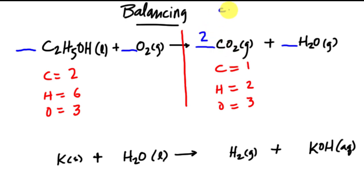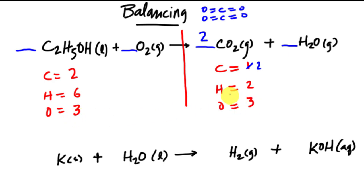So I'm going to balance my carbon first. To balance the carbon I need to get two on both sides, so I'm going to throw a two right here. That means I have two of these CO₂ molecules, so I now have two carbons. I also have to update my oxygens — that gives me four oxygens plus one, for a total of five. Make sure when you put a number in that you change all the elements affected by that coefficient. So now my carbon is balanced.